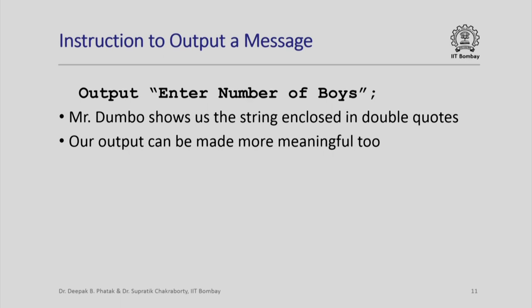Now when the string enclosed in double quotes — without the double quotes of course — is shown to us, then we know some input is expected. And suppose we write our input instruction after this: very obviously, Dumbo will first show this output to us, we know now some input is expected, and then we are ready to type a value. In exactly the same fashion, we can use the same output instruction to make our output more meaningful — namely the final value of n_students which Mr. Dumbo has to show us. Instead of just saying 'output n_students', we can output first a string like 'total number of students in the class' and then output that value.